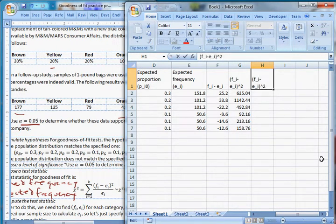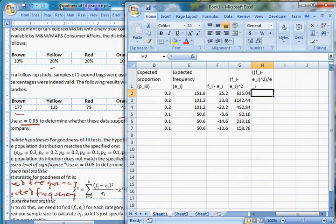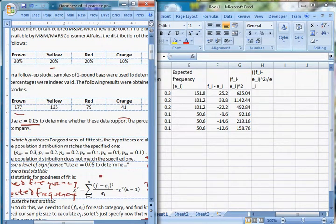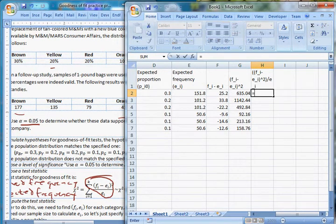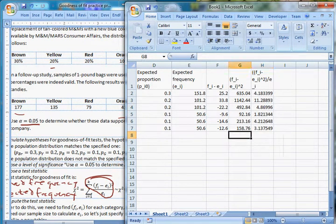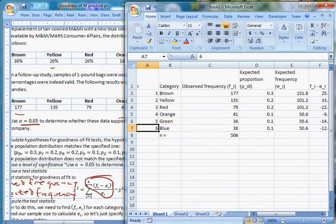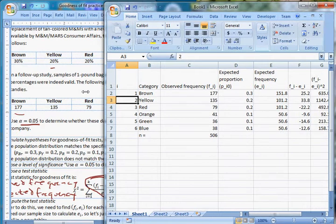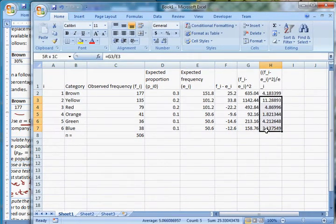And then last but not least, we have to take this and then divide it by e sub i. And that's kind of an ugly looking formula. If you want it to be pretty, then what you're looking for is this thing over here. This is what we're really coming up with. So what we do is we take this value from column G now and divide it by our expected frequency from column E. And we copy and paste these all the way down.